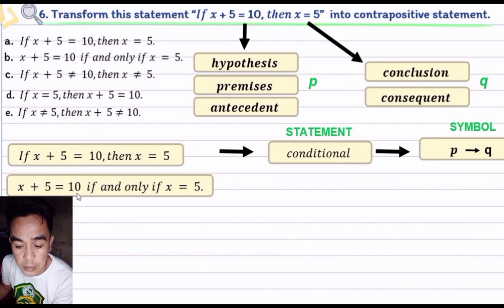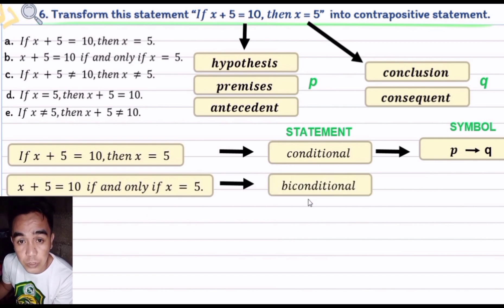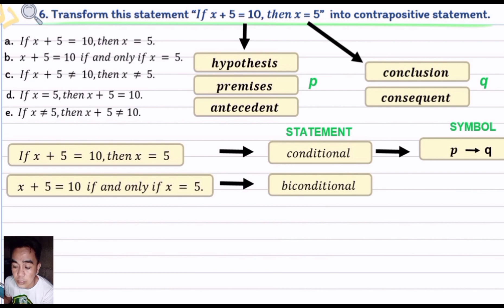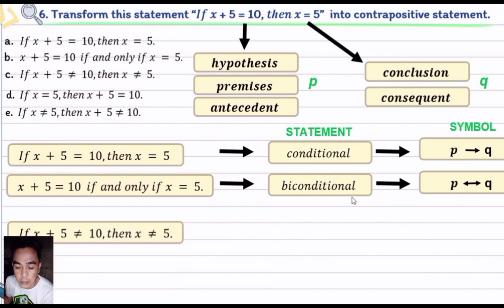Option b: x plus 5 equals 10 if and only if x equals 5. The word 'if and only if' can be written as 'iff' which means if and only if. In statement we call it a biconditional statement, since in symbol the arrow goes to the left as well as to the right, which means x plus 5 equals 10 is equivalent to x equals 5, or x equals 5 is equivalent to x plus 5 equals 10.